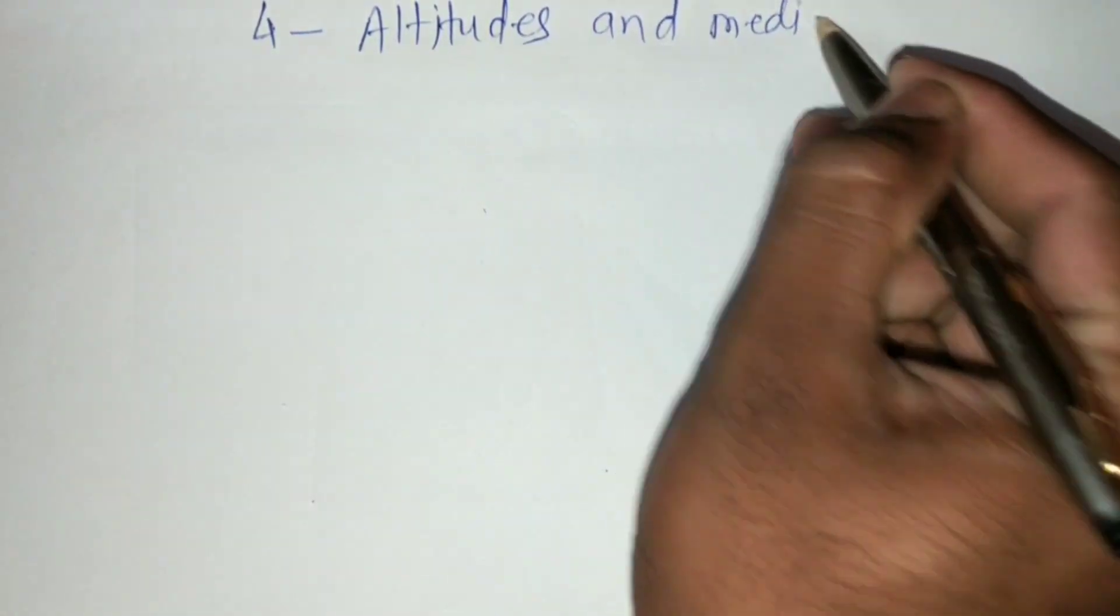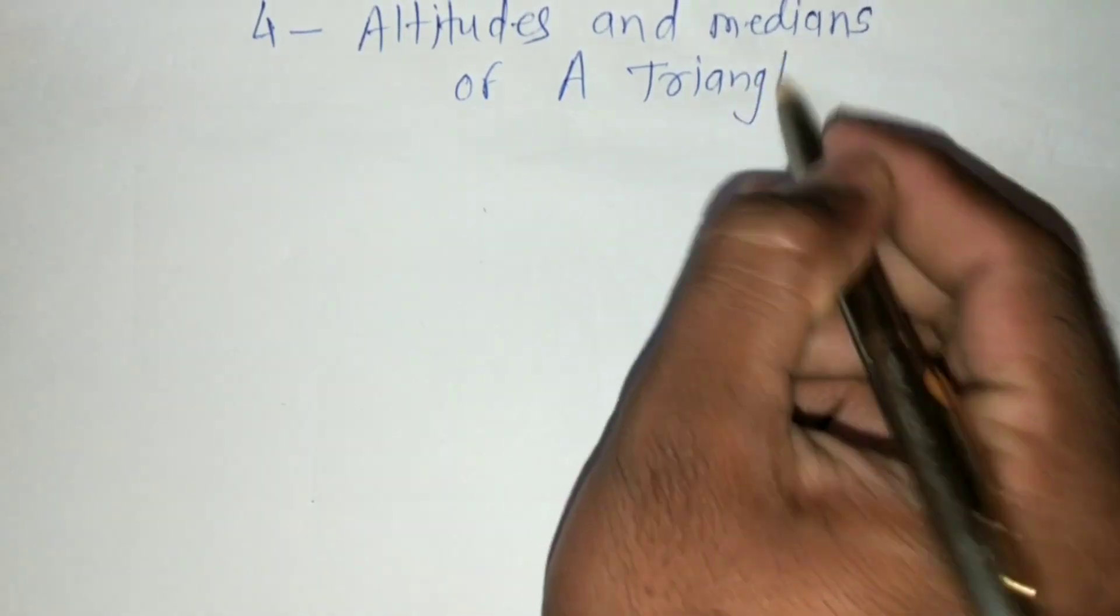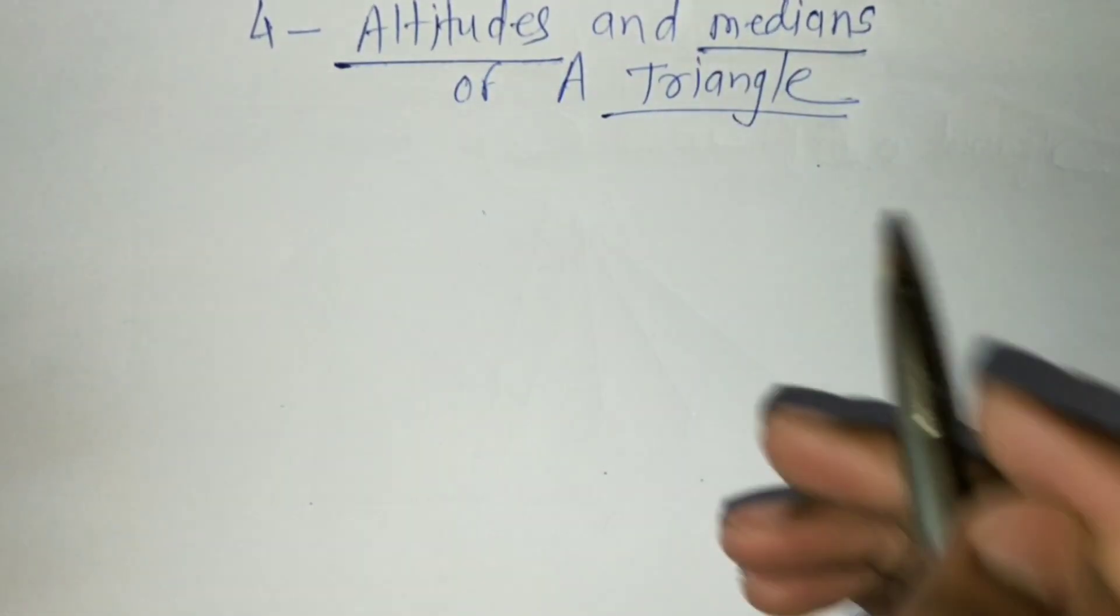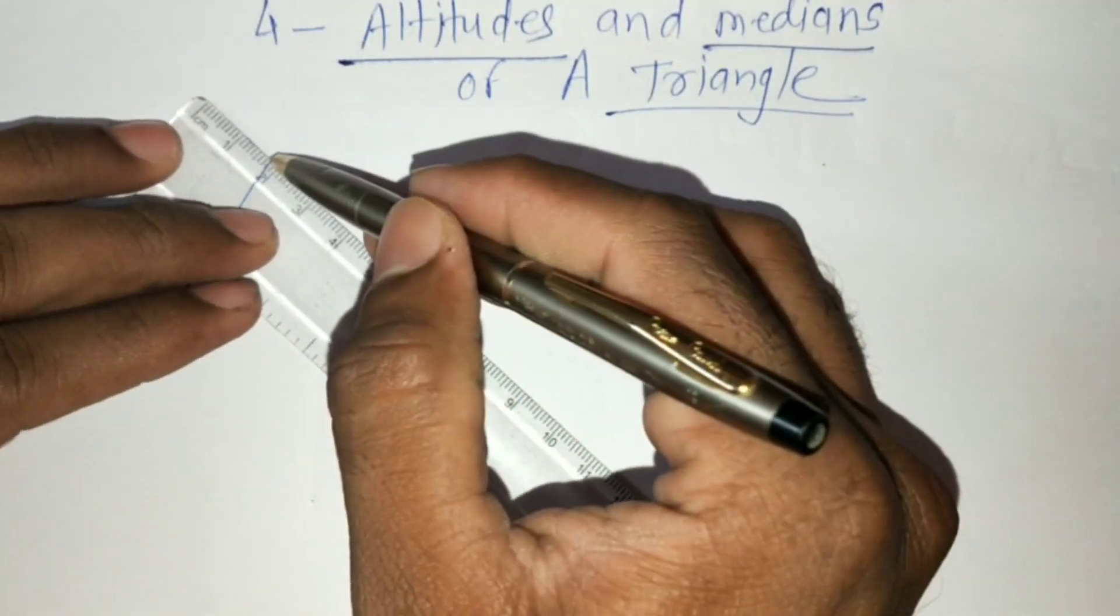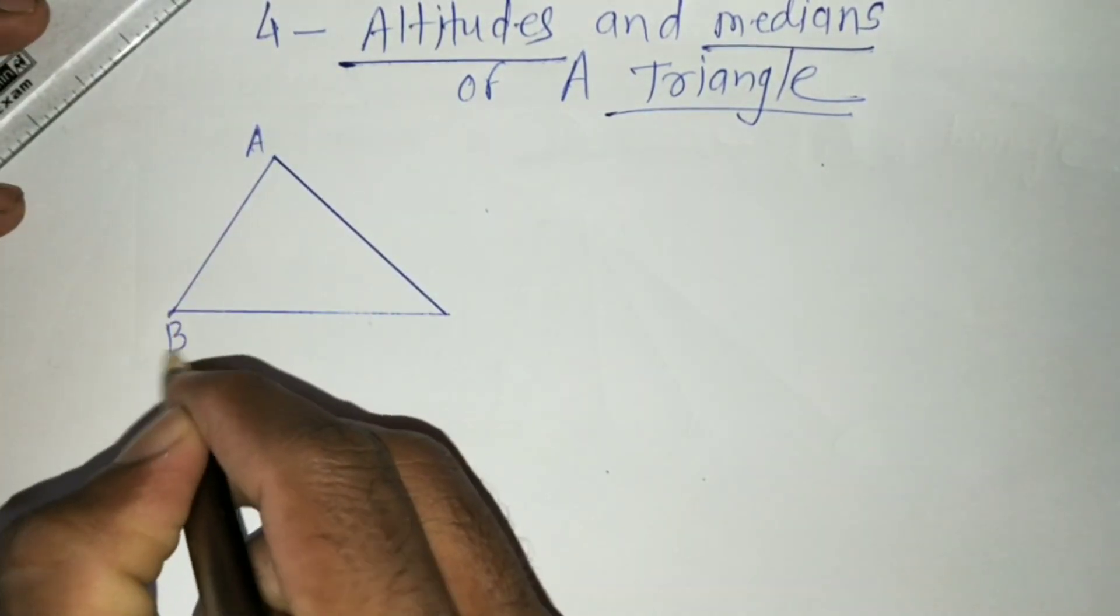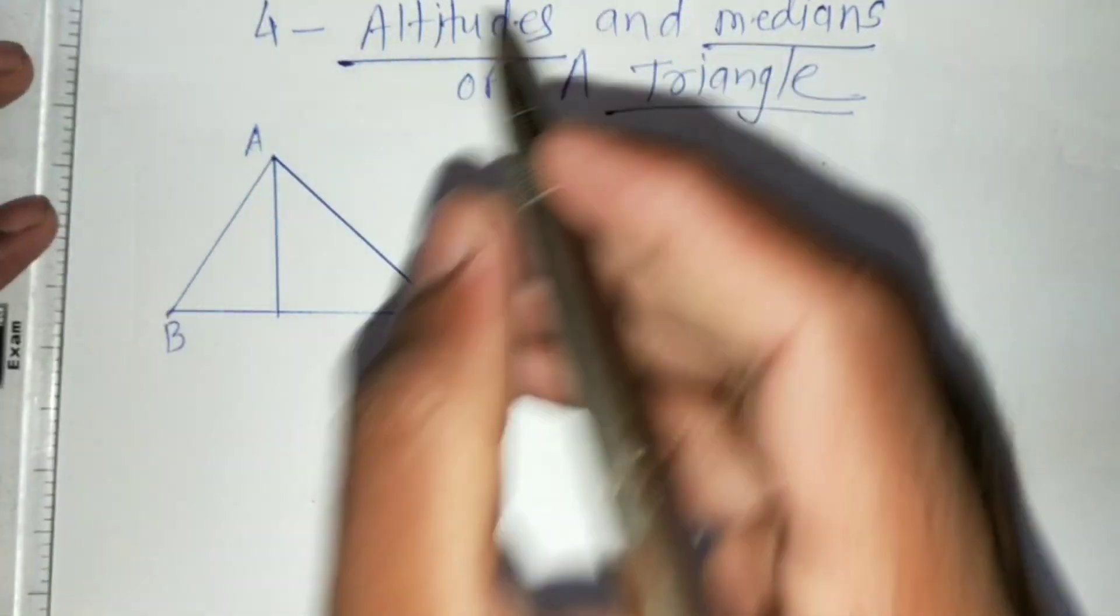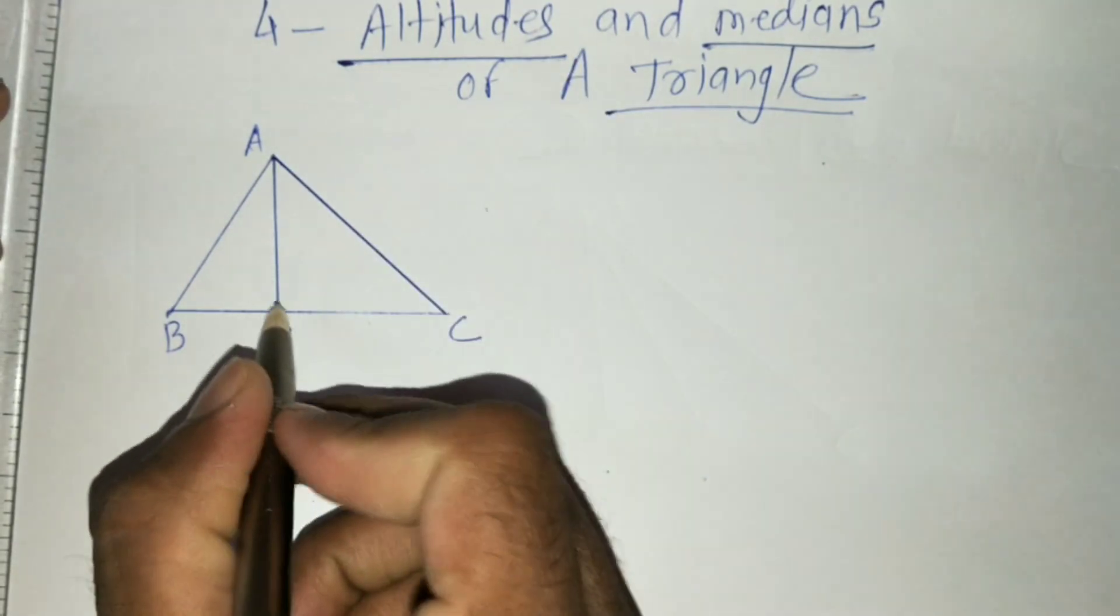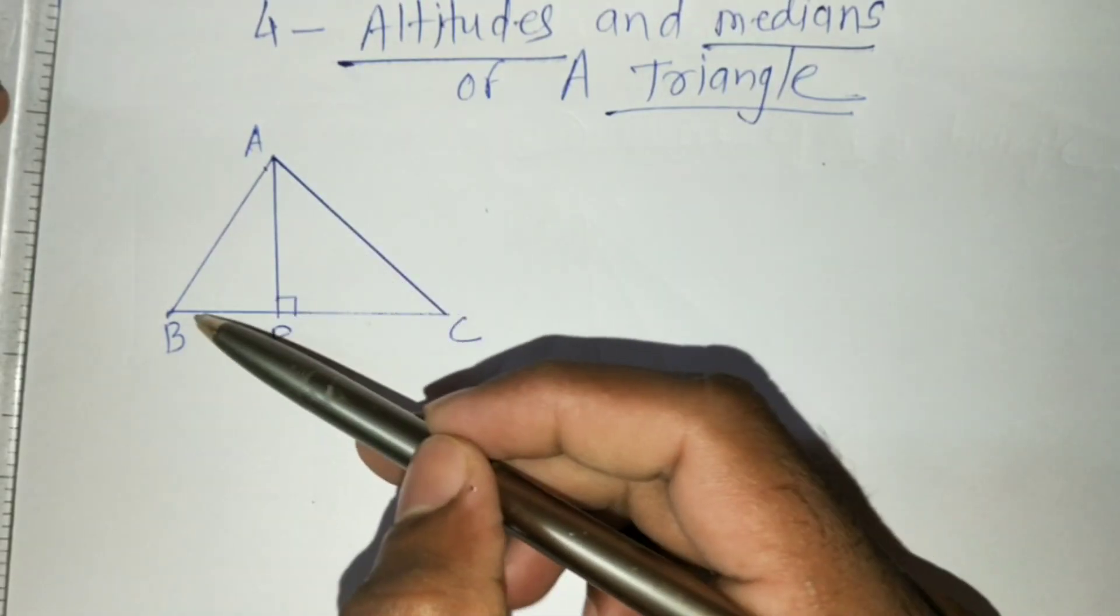So look at the triangle. This is triangle ABC with side AP. The perpendicular segment drawn from the vertex of a triangle to the side opposite to it is called an altitude.